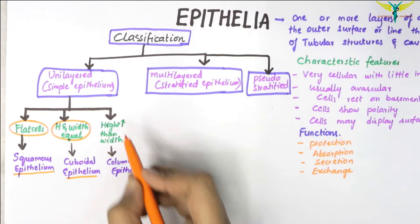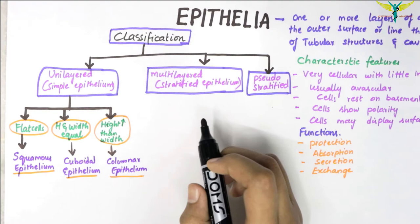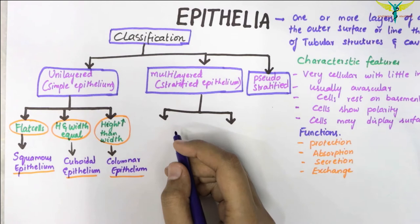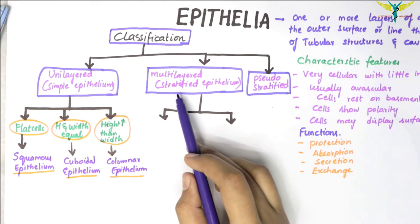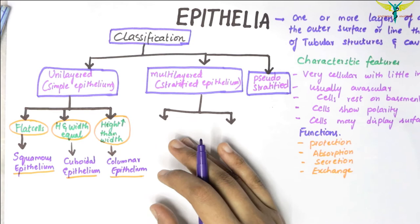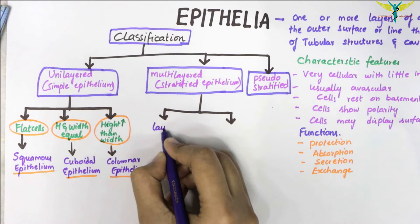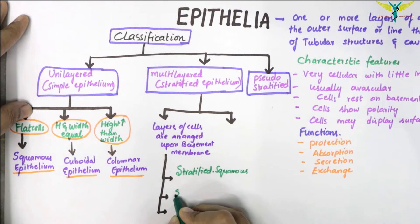Coming to the multilayered or stratified epithelium, it is of two types: stratified squamous epithelium and transitional epithelium. In the stratified epithelium, multiple layers of cells are arranged upon the basement membrane, and the epithelium is named according to the shape of the most superficial layer. The types include stratified squamous, stratified cuboidal, and stratified columnar.